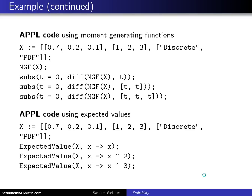Now if you want to calculate these values in APPL, you can do the following. The first way uses moment generating functions. First, you assign X to the discrete distribution. The mass values are 0.7, 0.2, and 0.1. The support values are 1, 2, and 3.